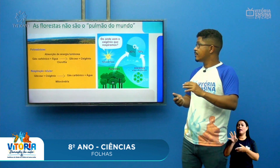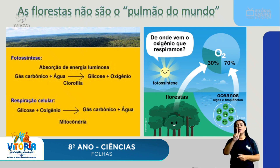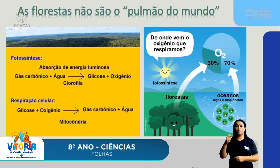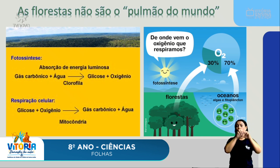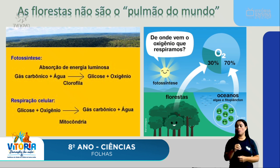Na fotossíntese, ocorre a absorção de energia luminosa. O gás carbônico é absorvido com a água da planta e, através de um corante chamado clorofila, vai produzir glicose — que serve para a planta — e oxigênio, que vai para o ar. Na respiração celular, ocorre o contrário: a glicose que a planta já tinha, com o oxigênio que ela absorve no ambiente, produz gás carbônico para o ambiente e água para seu próprio organismo. Isso ocorre em estruturas chamadas mitocôndrias, enquanto a fotossíntese ocorre em cloroplastos, que são estruturas da célula especializadas em fazer fotossíntese.